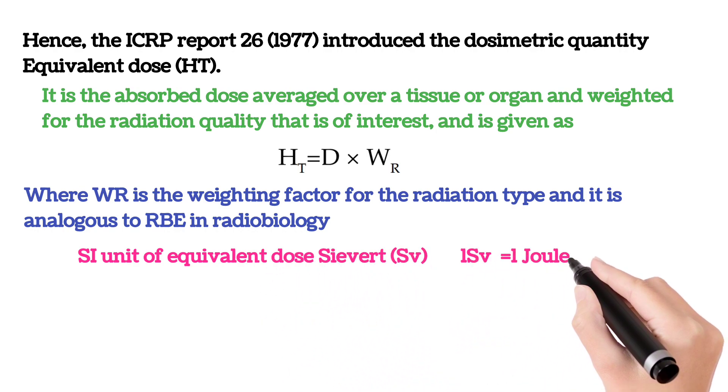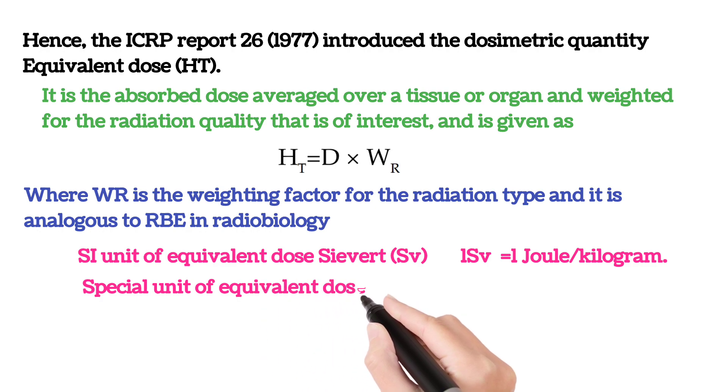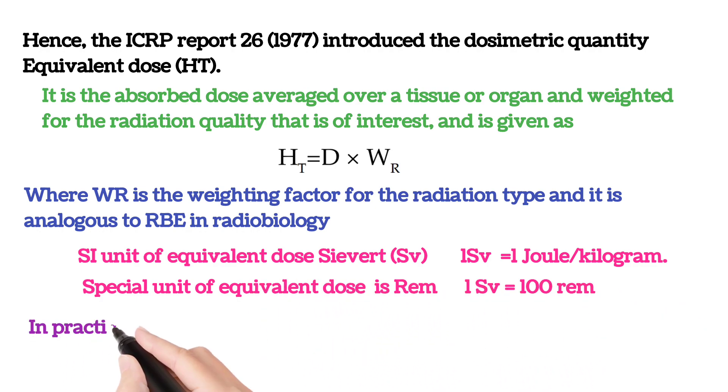The SI unit of equivalent dose is sievert, and the special unit of equivalent dose is rem. 1 sievert equals 100 rem, and in practice millisievert unit of equivalent dose is used.